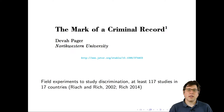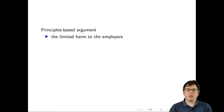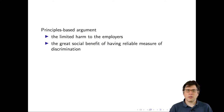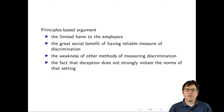These studies are quite common. Field experiments to study discrimination — there have been at least 117 studies in 17 different countries. The people who do these experiments without consent make an argument with four main parts: there is limited harm to the employers, there is great social benefit from having reliable measures of discrimination, there are weaknesses of other methods such as statistical observational data, and the deception does not strongly violate the norms of that setting.